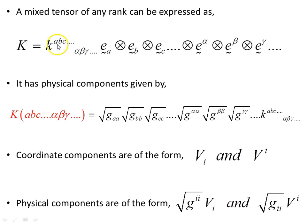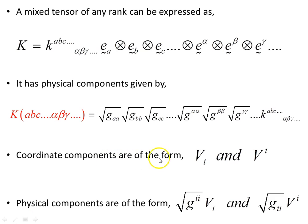A mixed tensor of any rank can be expressed as a tensor product of basis vectors for however many indices it has. Its physical components are given by the generalized pattern: the square root of G^ii terms go with the upper (contravariant) indices, and the square root of G_ii terms go with the lower (covariant) indices. The coordinate components are of the form b_i (covariant) and b^i (contravariant), while the physical components are obtained by multiplying by the appropriate square-root metric factors.